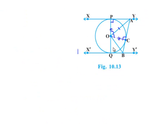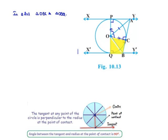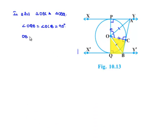Again, let us consider triangles OCB and OBQ. In these triangles, angle OQB equals angle OCB equals 90 degrees, since at the point of contact the tangent subtends an angle of 90 degrees with the radius. OB is the common side, and OQ equals OC as both are radii. By SAS congruency, triangle OBC is congruent to triangle OBQ.